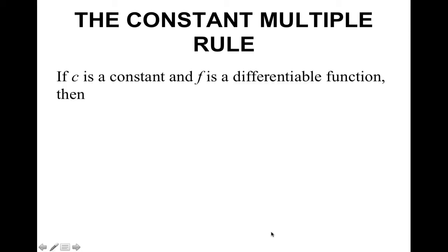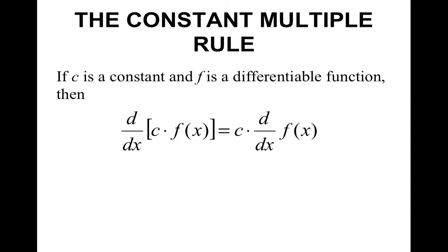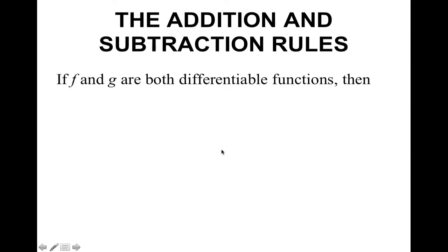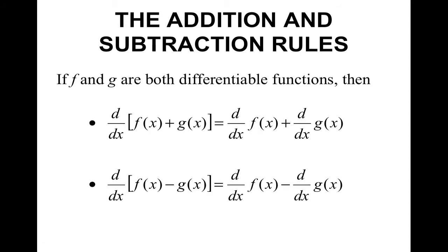The constant multiple rule: if c is a constant and f is a differentiable function, then the derivative of a constant times a function is equal to — you can factor out the constant, take the derivative of the function, then multiply by that constant. The addition and subtraction rules: if f and g are both differentiable functions and you have two functions being added or subtracted, you can take the derivative of each term individually and then add or subtract them.